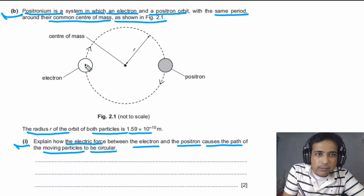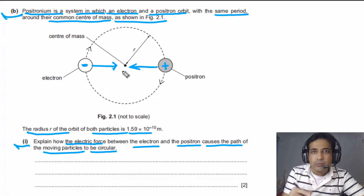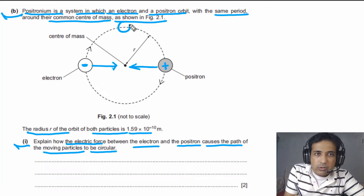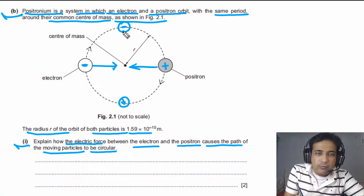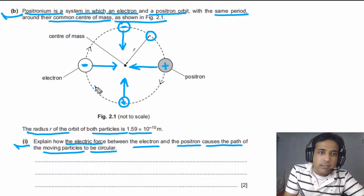Looking at the forces between these particles: the electron is negatively charged and the positron is positively charged. There is a force on the electron due to the positron directed to the right, and a force on the positron directed to the left. These two forces are equal in magnitude. When the electron is at one point, the positron is directly opposite. We can draw forces on these particles at any point along the orbit — there will be a force on the electron and an equal and opposite force on the positron.